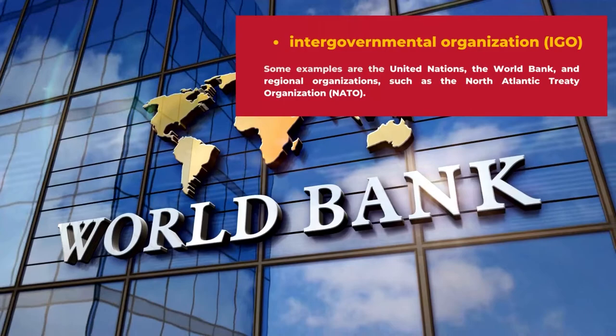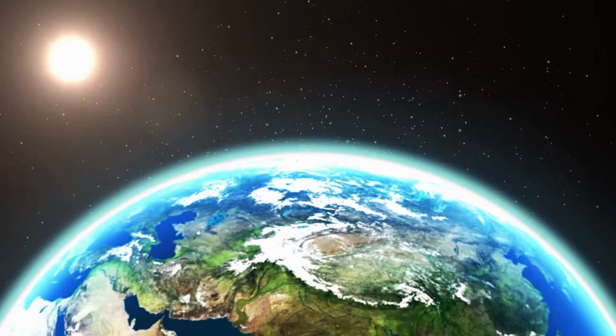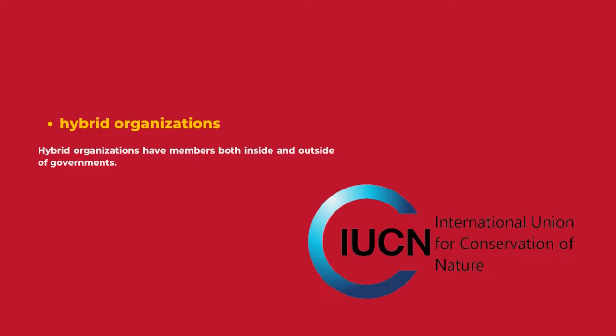Some examples are the United Nations, the World Bank, and regional organizations such as the North Atlantic Treaty Organization. International organizations can also be international non-governmental organizations, but their members don't officially represent governments. Hybrid organizations have members both inside and outside of governments.